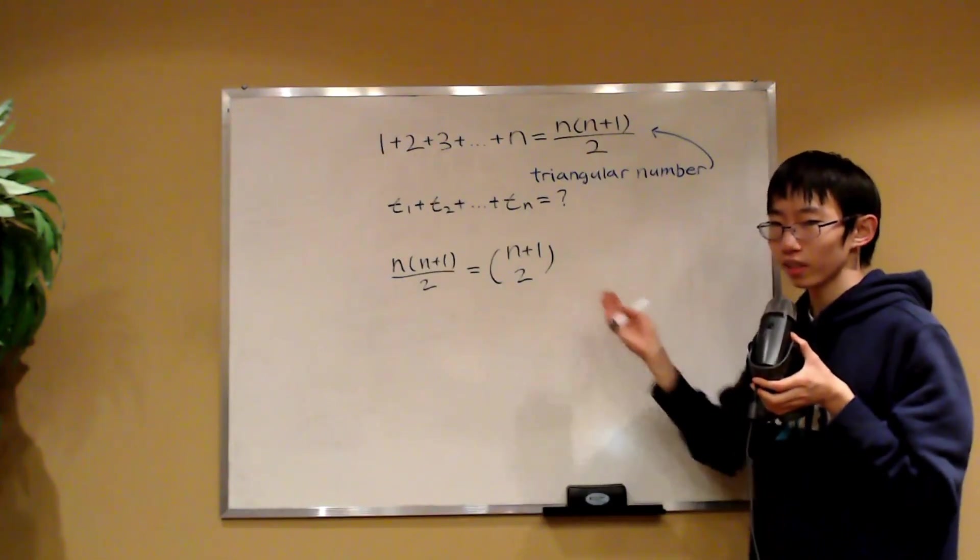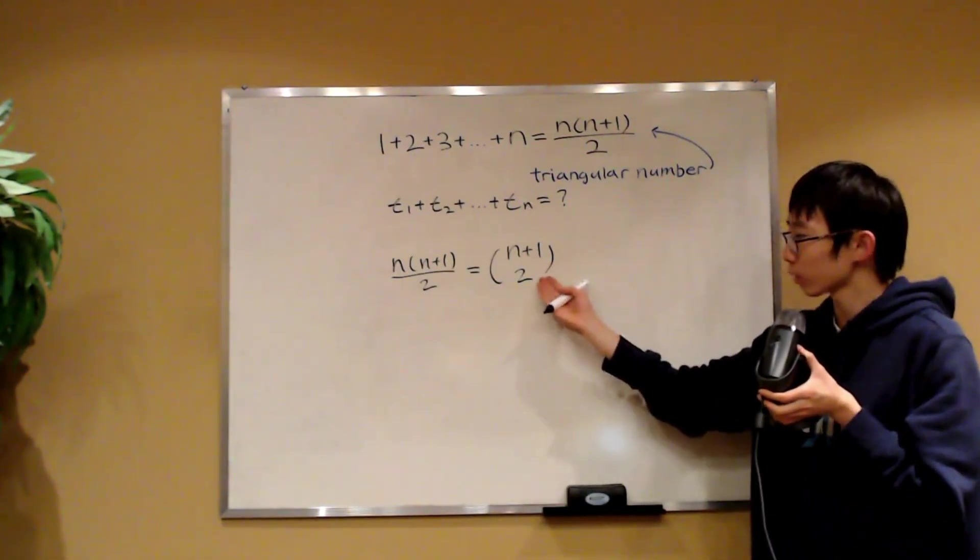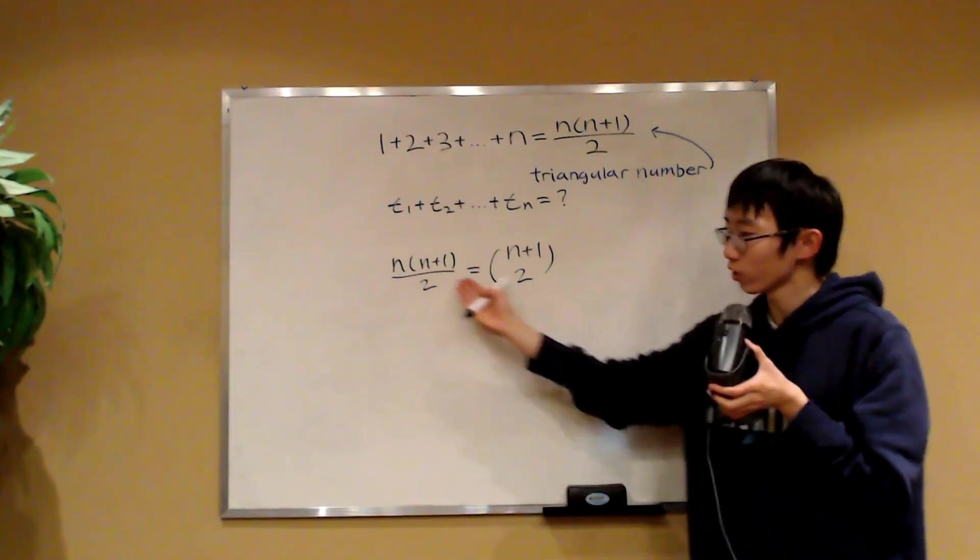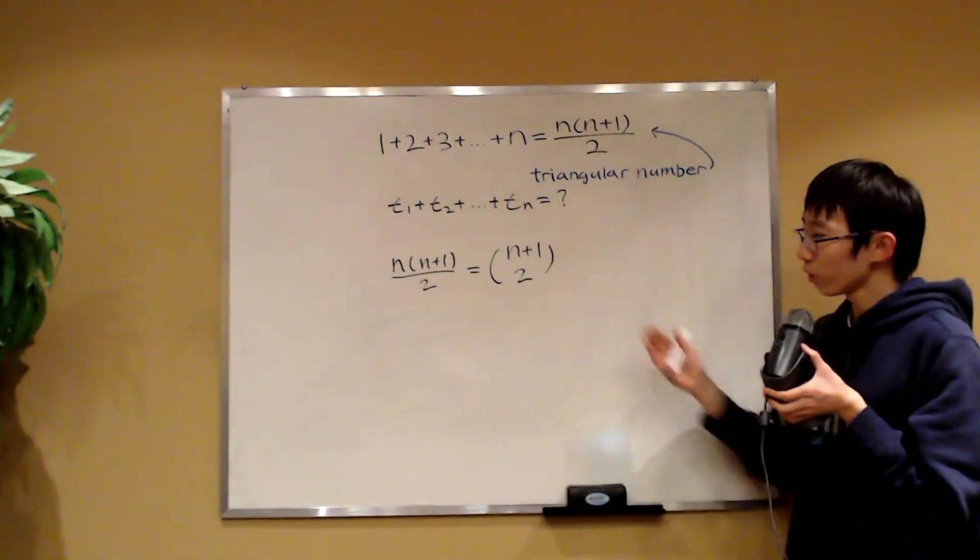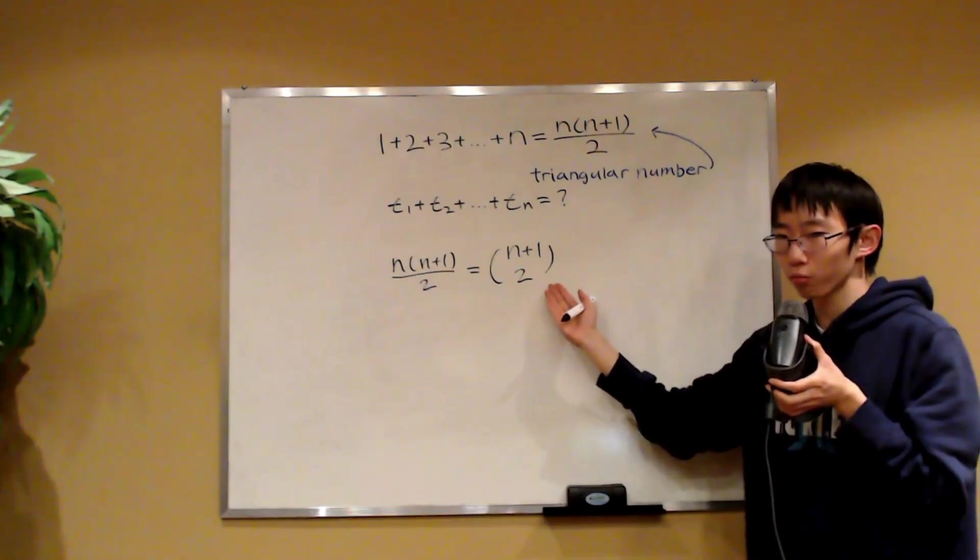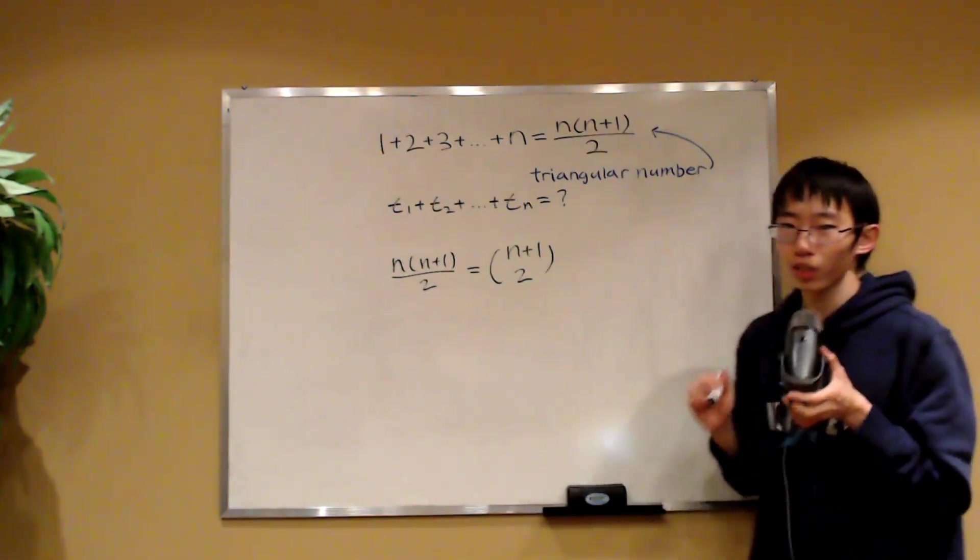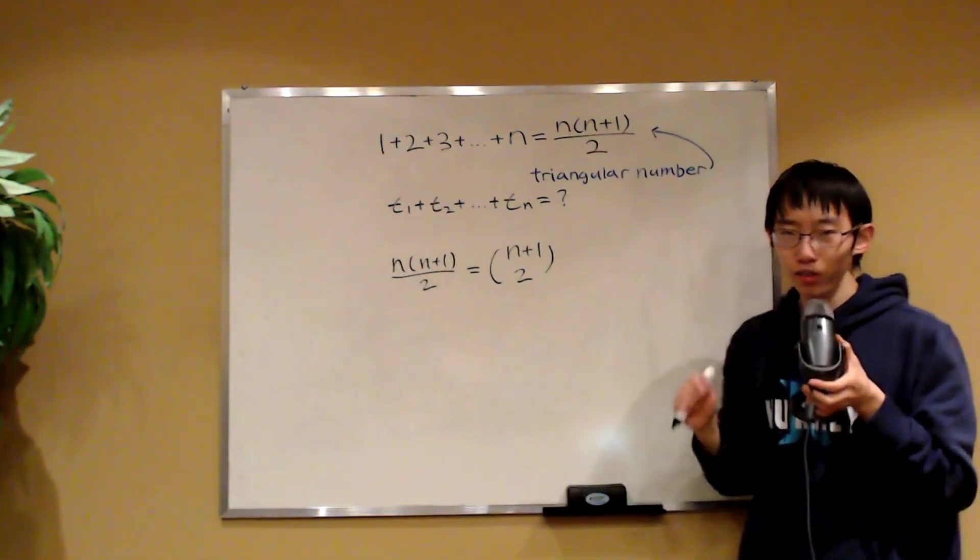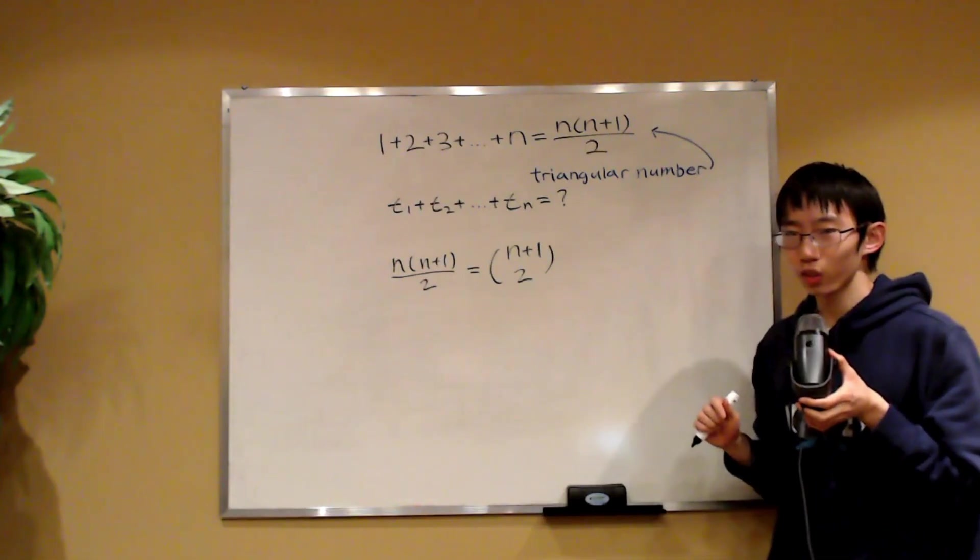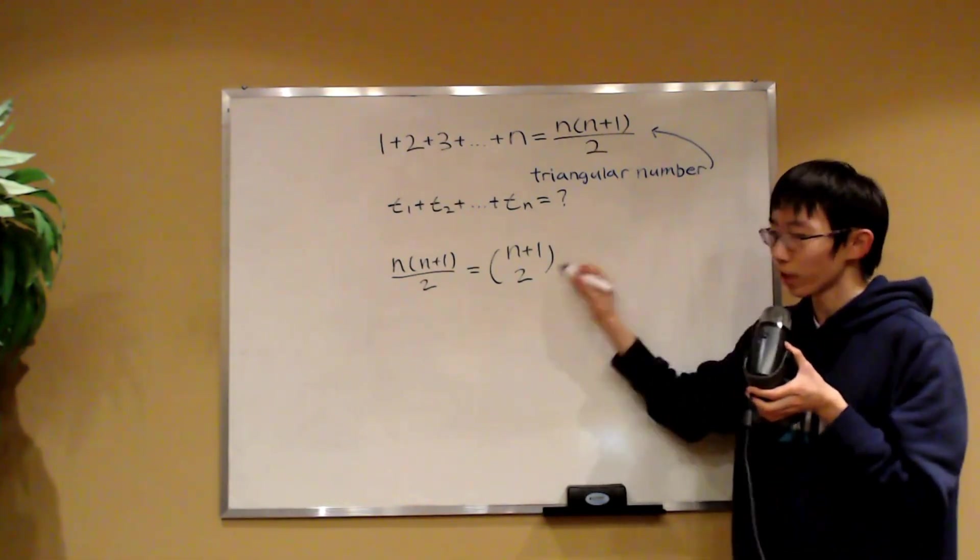You see, you can use the formula to expand this and you'll see it's equal to this. So we have written the nth triangular number as a binomial coefficient. And this is actually going to be quite useful because there are a lot of identities that we can use to simplify the sums of binomial coefficients.